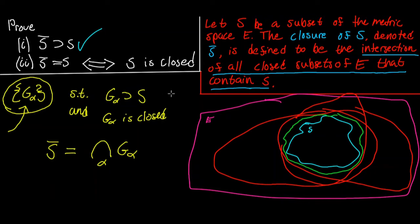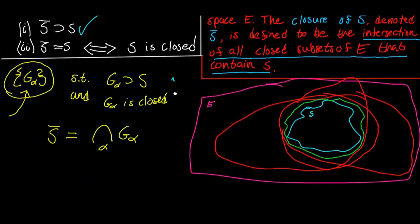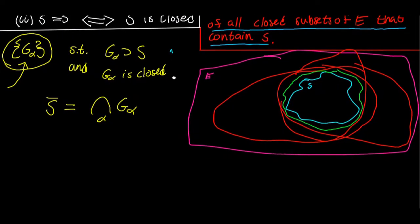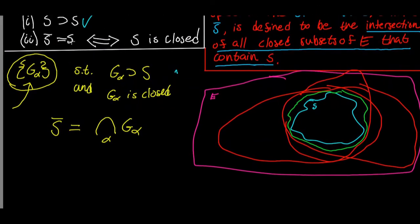To prove an if and only if statement, we have to prove both directions. First, supposing that S is equal to its closure, we show that implies S is closed. Then, going the other direction, supposing that S is closed, we show that implies S is equal to its closure.